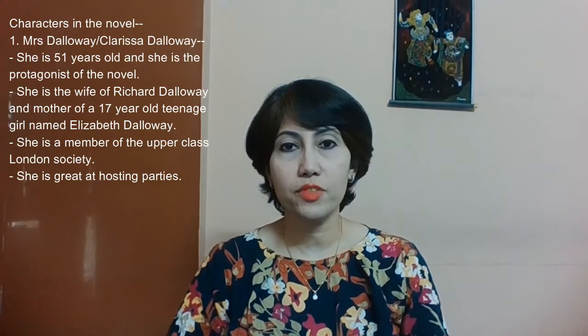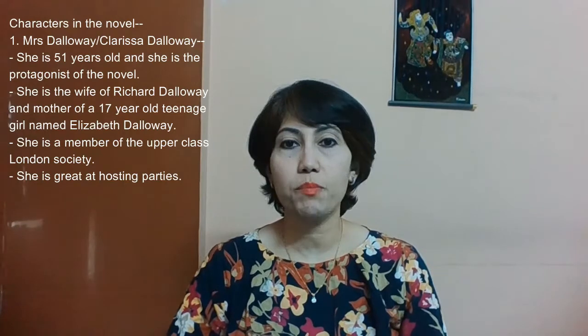Now let's look at some of the characters in the novel. The first character is the title character, Mrs. Dalloway, or Clarissa Dalloway as she is called. The 51-year-old protagonist is named Clarissa Dalloway. She is the wife of Richard Dalloway and mother of a 17-year-old teenage girl, Elizabeth Dalloway. She is a member of upper-class London society and she is great at hosting parties.